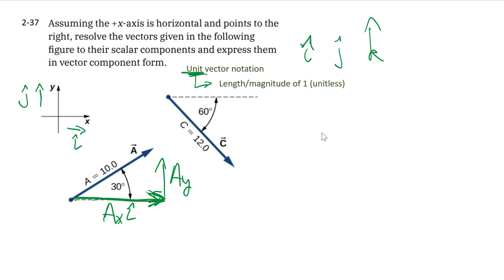Similarly, the y component is this number, a_y, but pointing in the positive y direction. So we multiply by j-hat. And then you can see that the overall vector is just the sum, head to tail, head to tail, of these two x and y vectors.